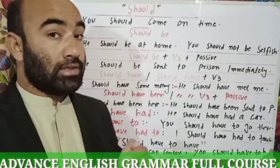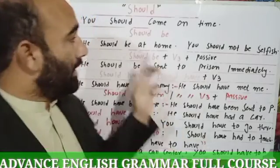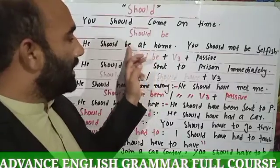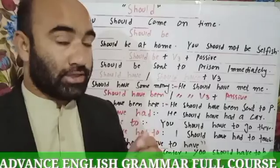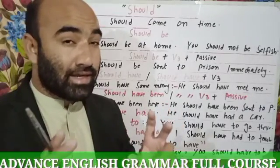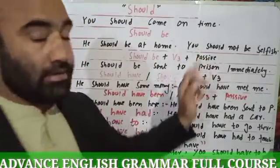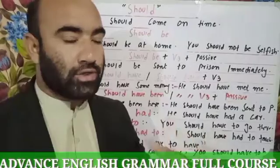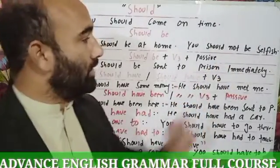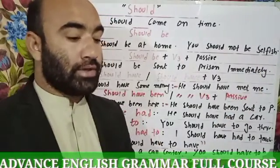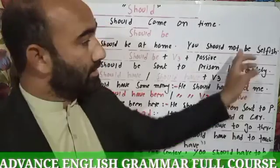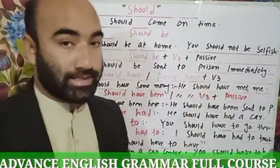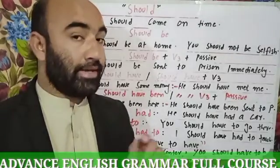What are we talking about? We are talking about the opinion, the suggestion. 'HE SHOULD BE AT HOME.' Here there is no action, no main verb available. Instead, SHOULD BE is functioning as the main verb, but it doesn't show any action — it shows just the existence. And another example: 'You should not be selfish.' So I am going to give someone advice. We use SHOULD BE and also SHOULD BE plus the third form of the verb in passive voice sentences.